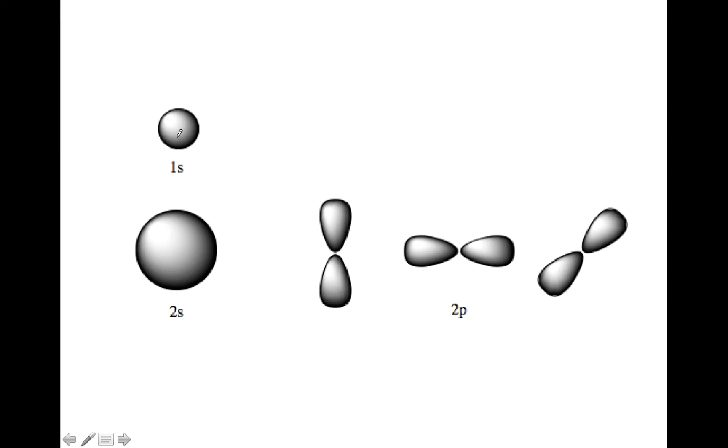So a 1s orbital, the 1 means it's relatively small, and s means it's spherical. So you could fit two electrons in that area around the nucleus. Then the 2s is also spherical, but it's larger, because the principal quantum number 2 in front means it's larger than the 1s.